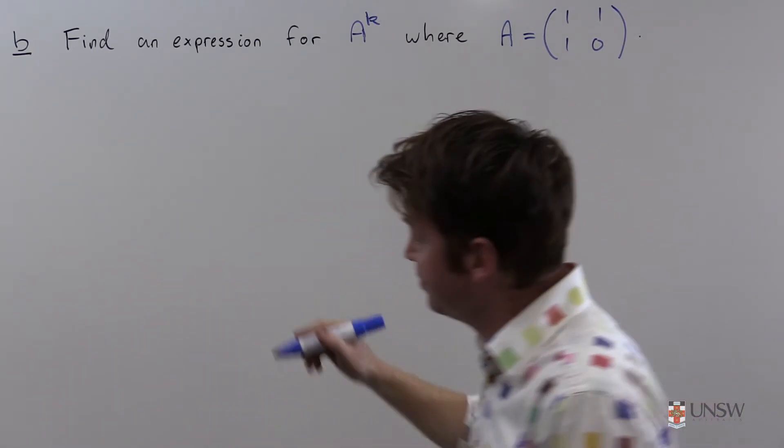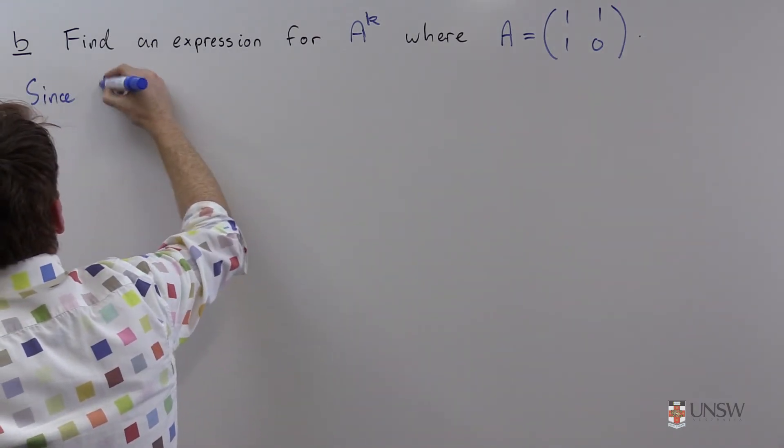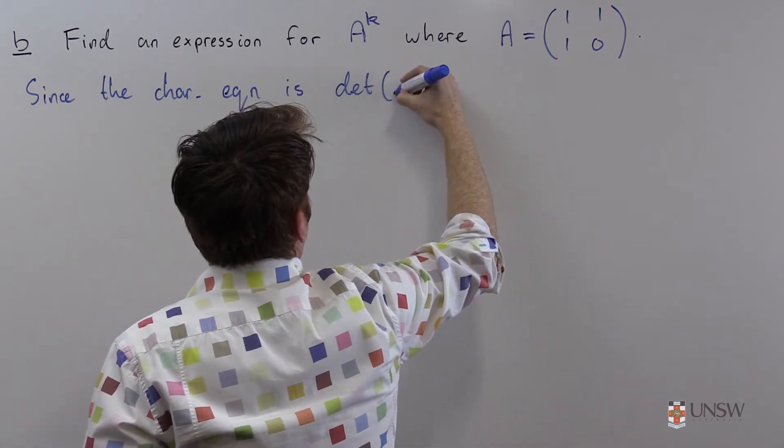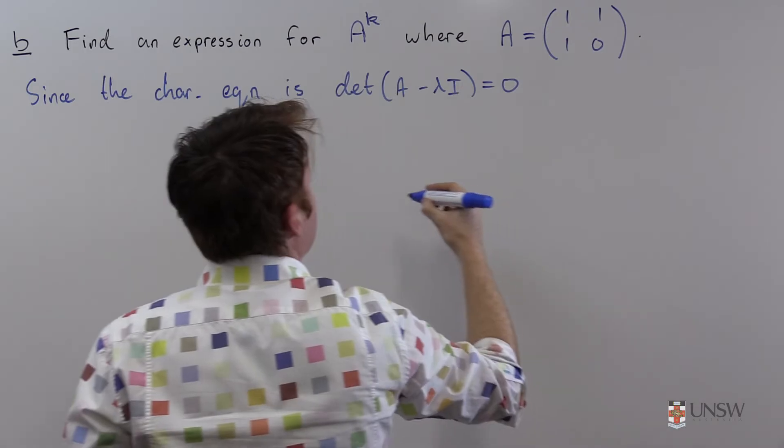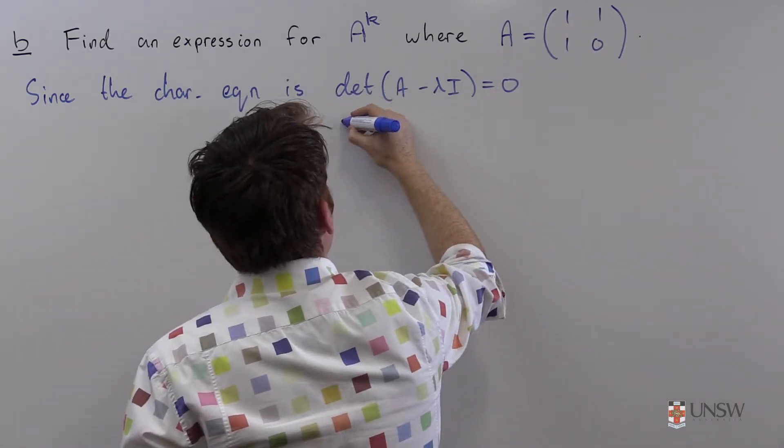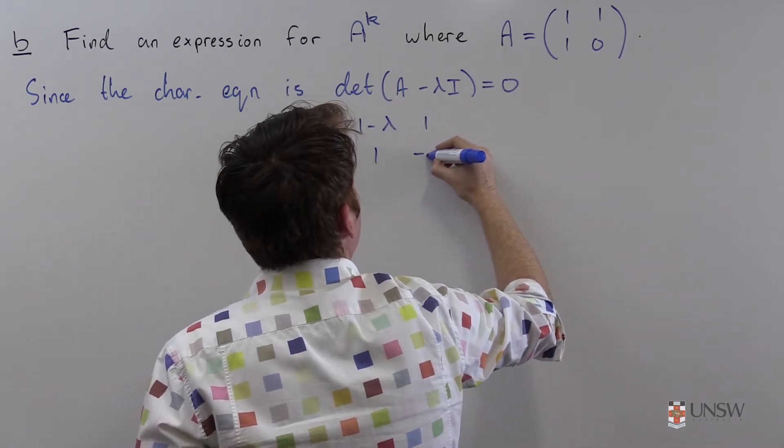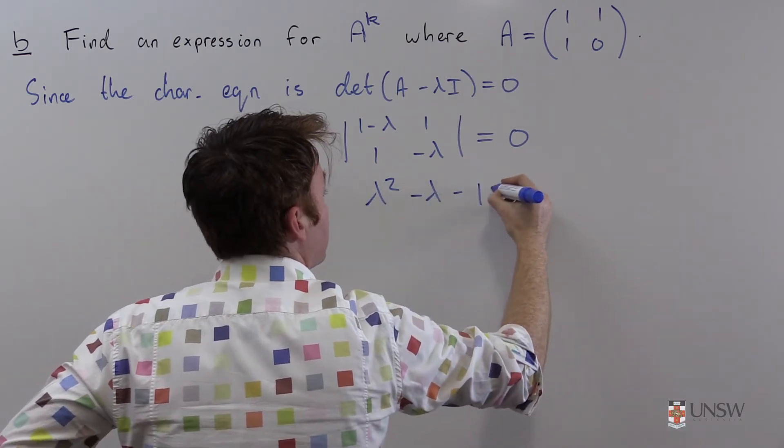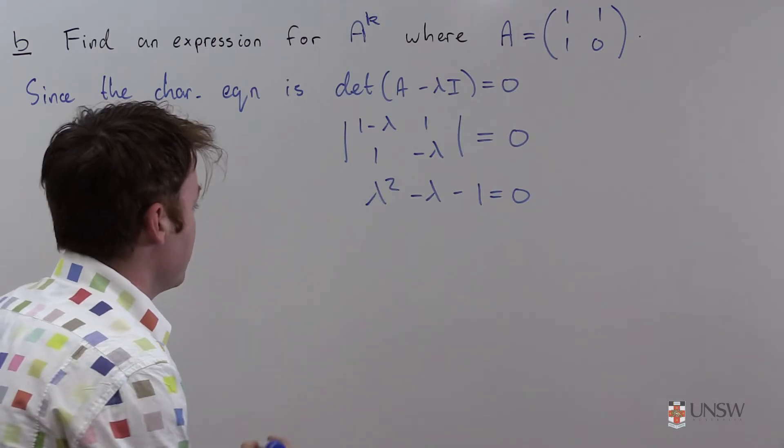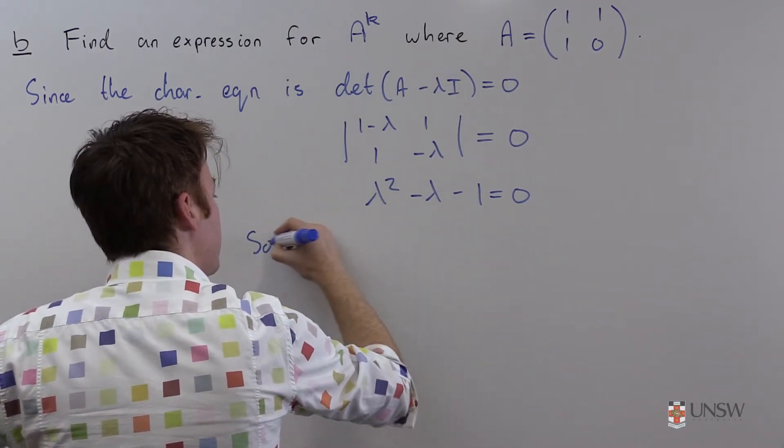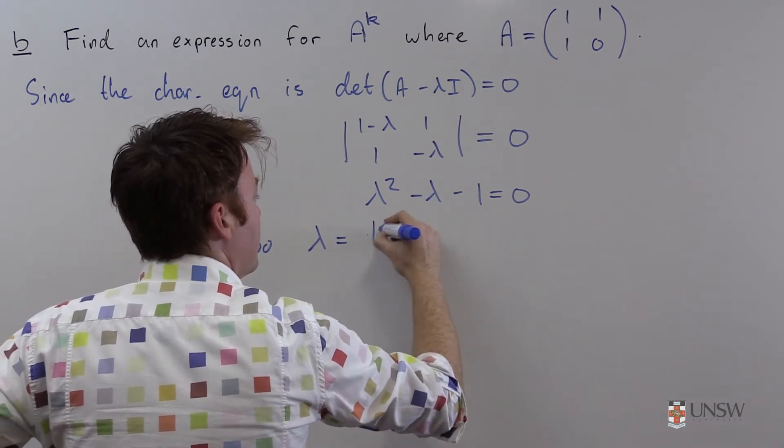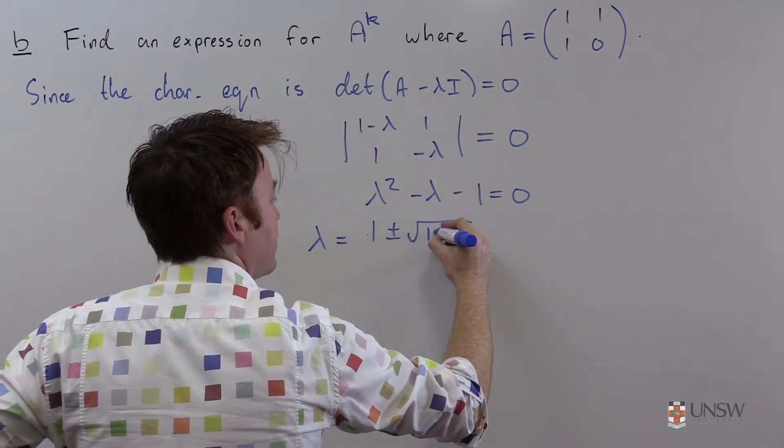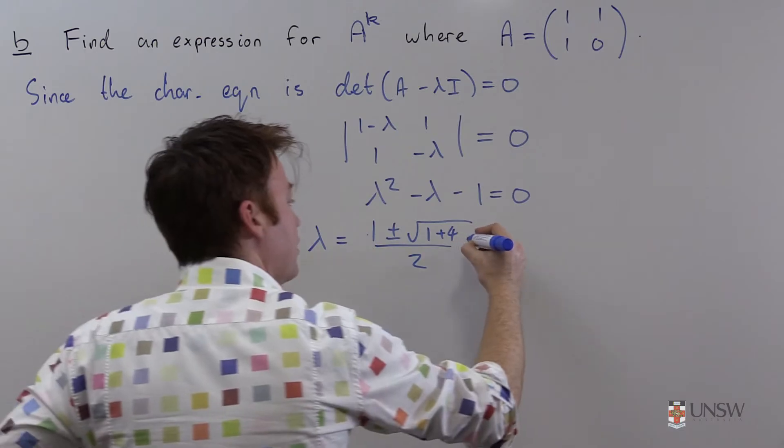First, eigenvalues. Since the characteristic equation is det(A - λI) equals 0, then that's the determinant of this thing minus λI, so that's det [1-λ, 1; 1, -λ] equals 0, which is λ² - λ - 1 equals 0. Might need the quadratic formula for this one. So λ equals (1 ± √(1+4))/2.